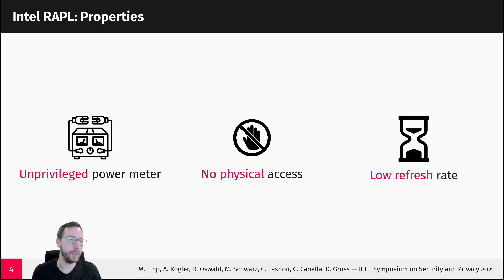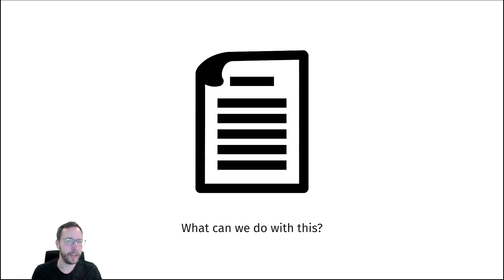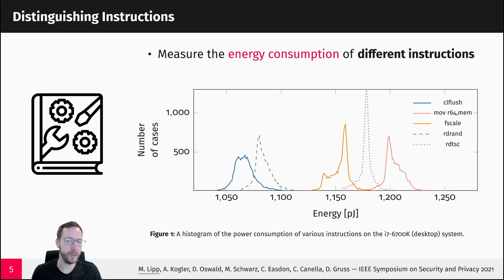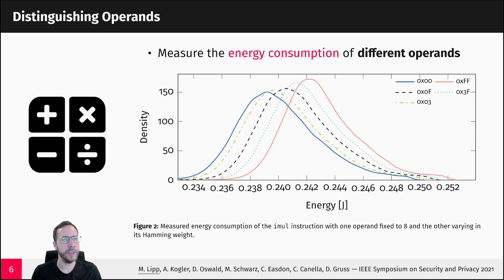However, in contrast to classical power side-channel attacks where you have an oscilloscope, with this interface we only have a limited update rate. So the question we want to tackle in our paper is: what can we actually do with this, and what can we measure from this interface? The first example is that we measure the energy consumption of different instructions. As you can see, we can distinguish between different instructions because they have a different energy footprint — for instance, the FSCALE instruction requires more energy than the ADD/AND instruction.